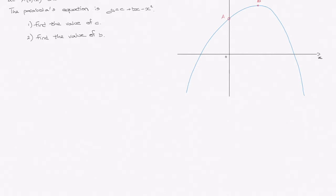We're told that this parabola intersects the y-axis at A with coordinates 0, 12, and has vertex at B with coordinates 2, 16. We're then told that the parabola's equation is y equals c plus bx minus x squared, and finally we're asked to do two things.